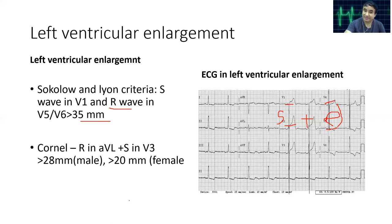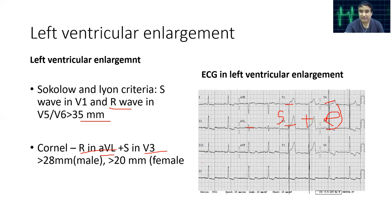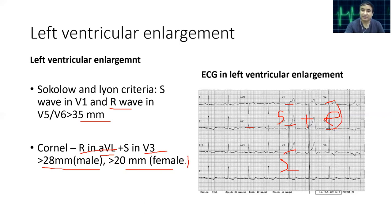We can also apply the Cornell voltage criteria. AVL looks at the left side of the heart, so there will be a more positive R wave in AVL. V3 looks at the anterior aspect, so there will be a more negative S wave in V3. We add the S wave in V3 with the R wave in AVL. If it is more than 28 mm in males or more than 20 mm in females, we suspect left ventricular hypertrophy.